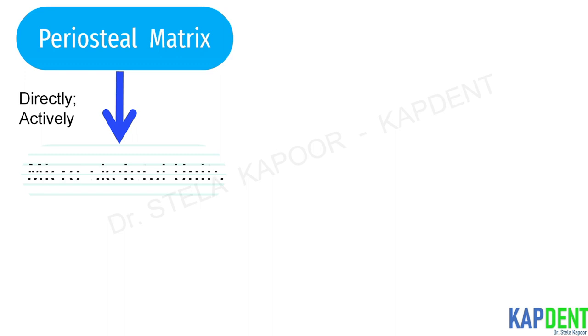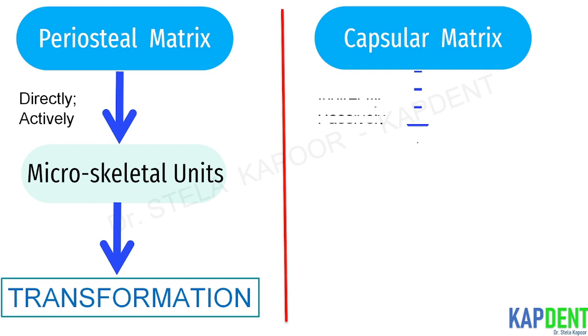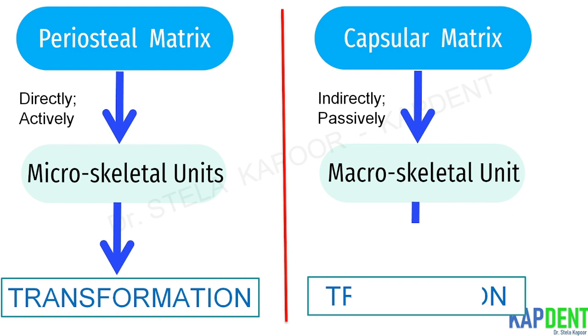The periosteal matrix, which consists of muscles, blood vessels, nerves and glands, acts directly and actively upon their related microskeletal units and produces transformation of the size and shape of the skeletal units. This mainly occurs by the process of bone deposition and resorption. The capsular matrix, on the other hand, acts indirectly and passively on their related macroskeletal units, producing a translation in space, which is a change in the spatial position.